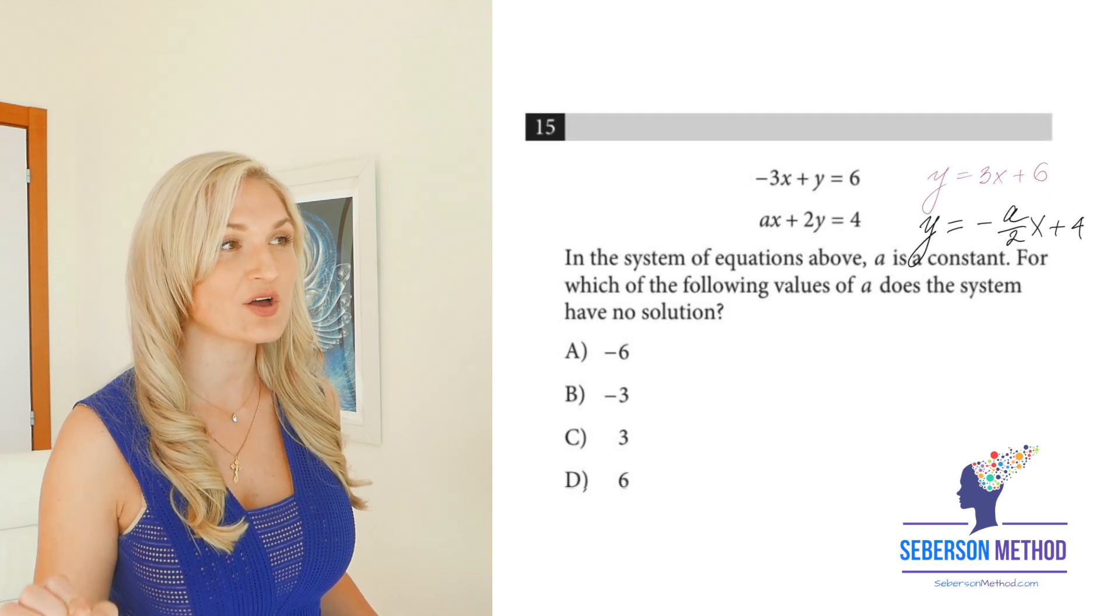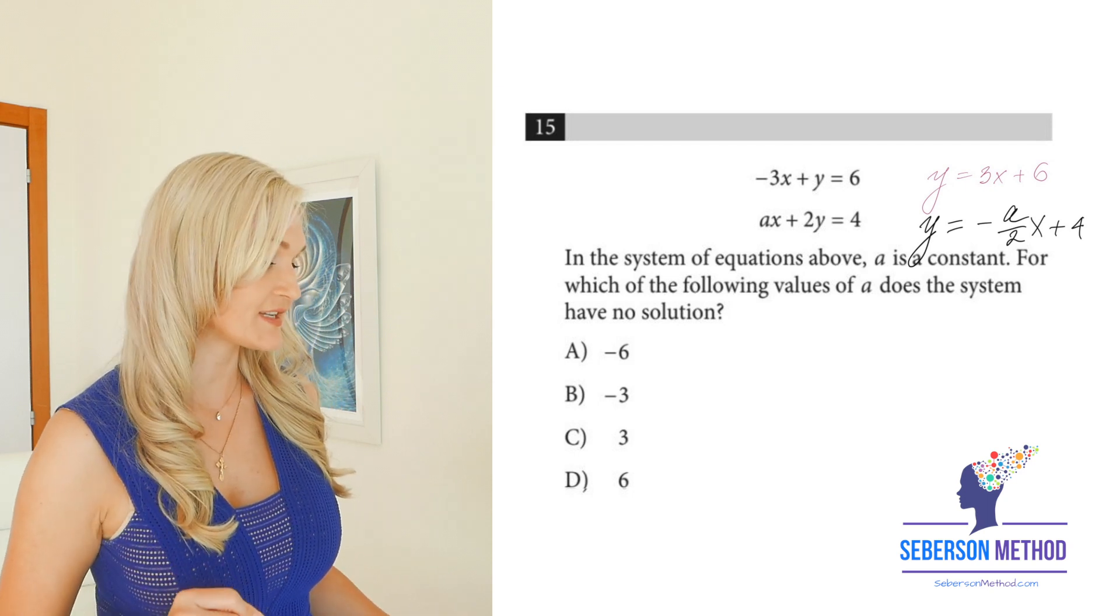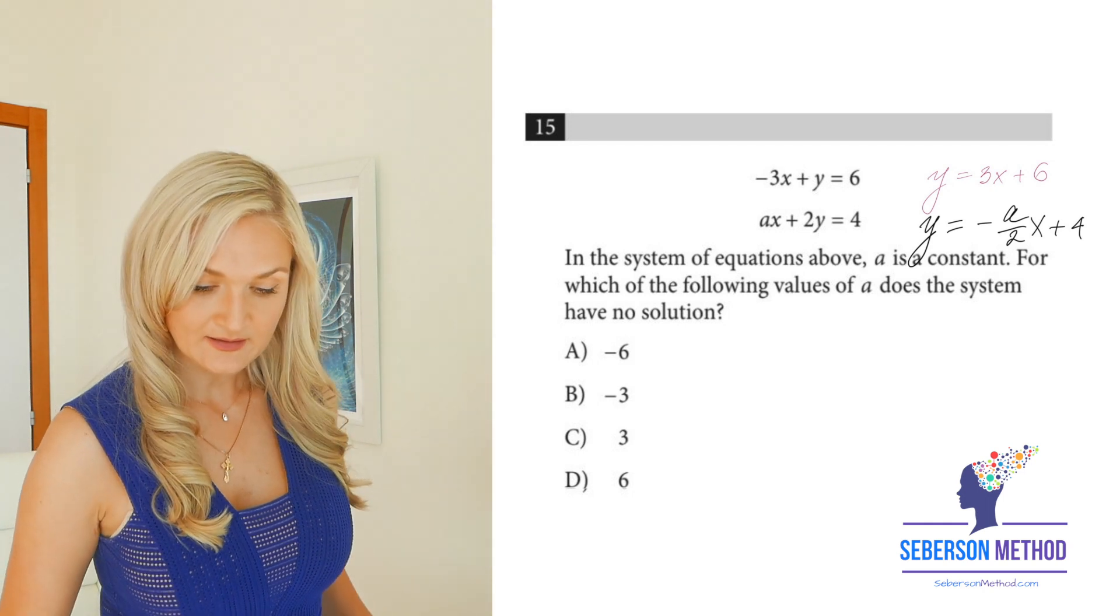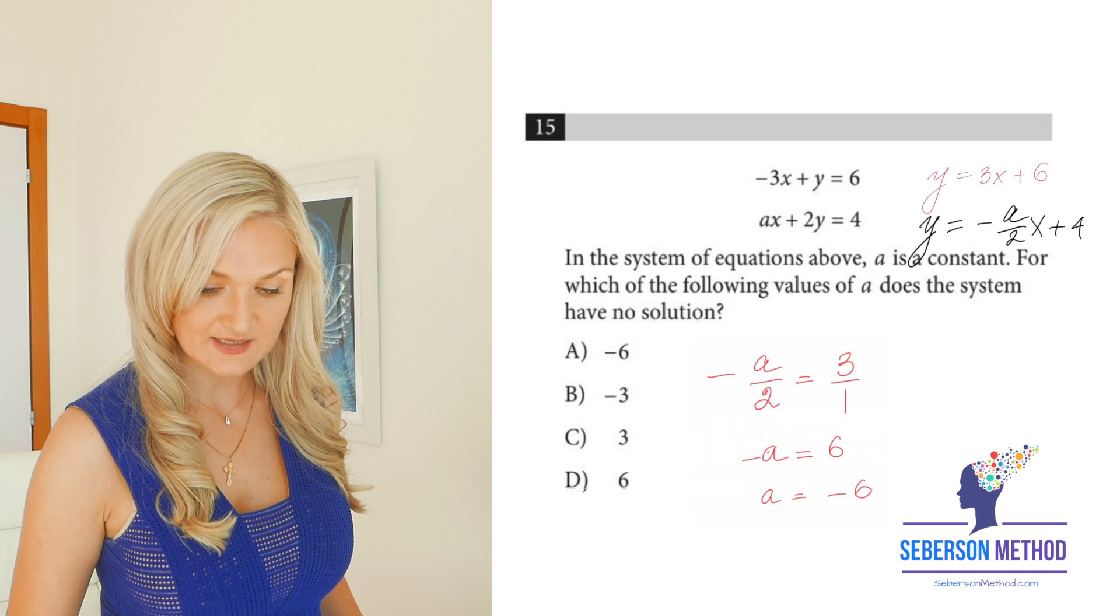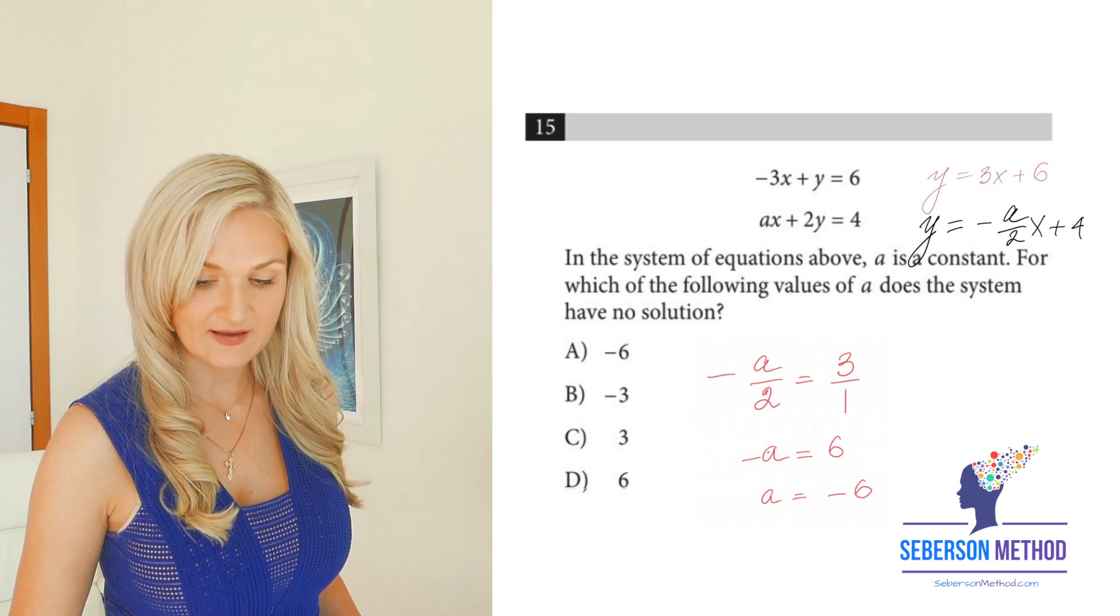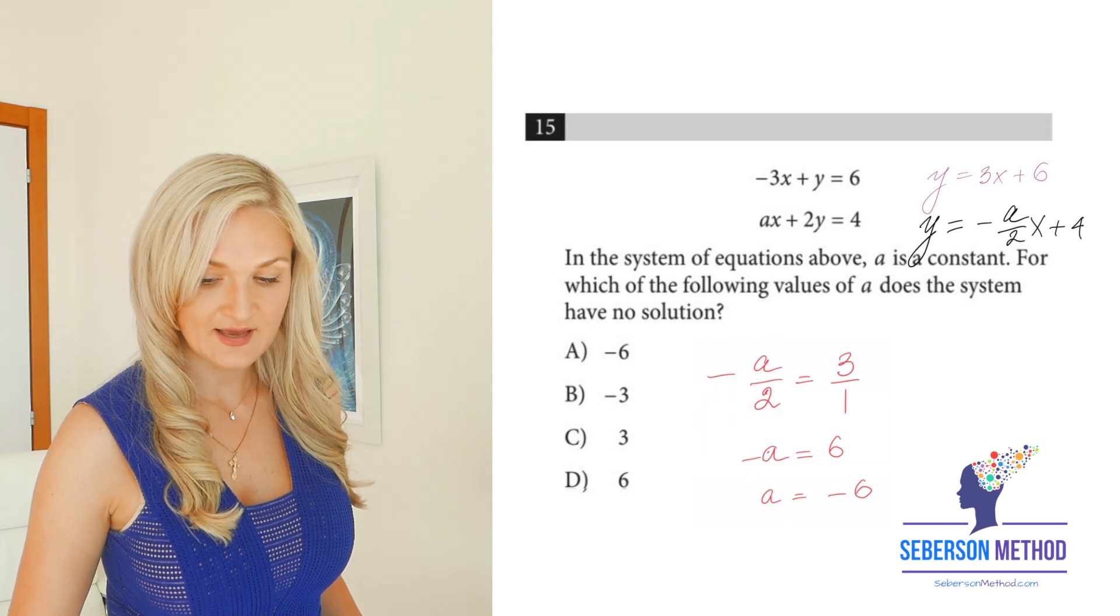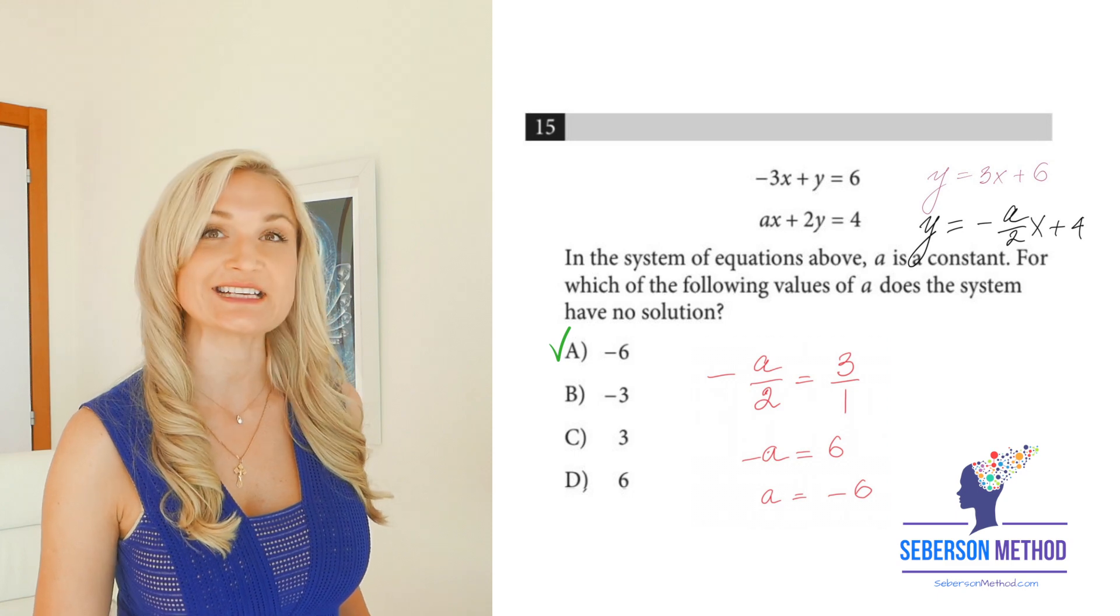Now we have a simplest equation to solve. Negative a over two is equal to three. Your negative a is equal to six. A is equal to negative six. The right answer is a.